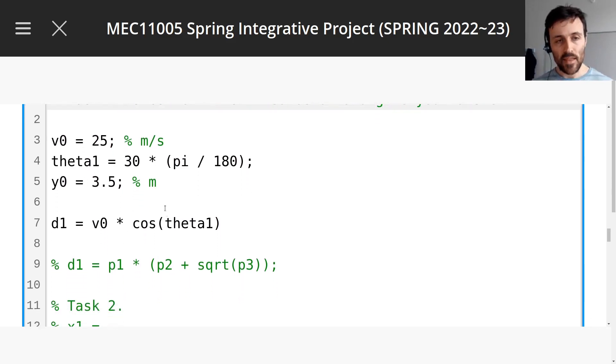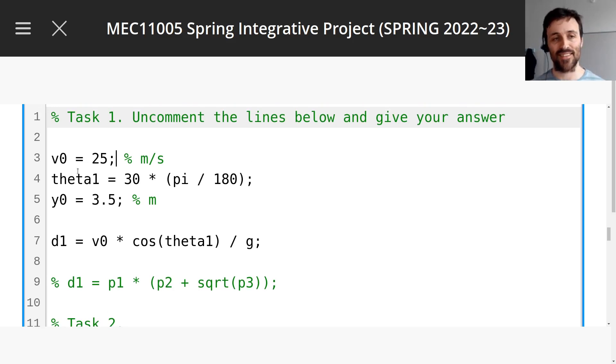So now that you've done that, if you go back, if you can open the formula, if you can look at two browsers and look at the formula for d at the same time you're writing code, you'll see that the answer, you can see that it can translate like this. So v0 times cosine theta1 divided by g. So actually, before we go any further, let's run this and show you what the output is.